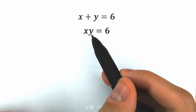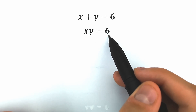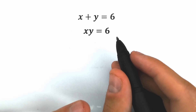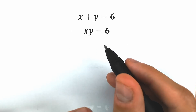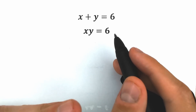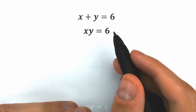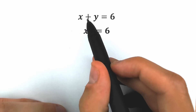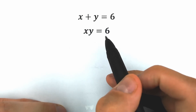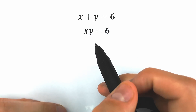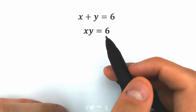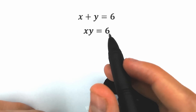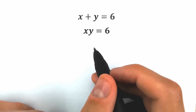x plus y equals 6 and x times y equals 6, and we need to find x and y. A lot of students might say this is very easy, a basic school question. But a lot of students are confused about this step when addition equals 6 and multiplication equals 6. So right now let's solve this challenge and check our answers at the end of the video.